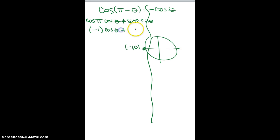Cosine theta, plus now my sine here is 0 times sine theta. Right, and so then I'm going to get a negative and then times the cosine theta.